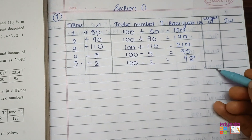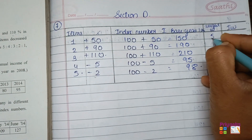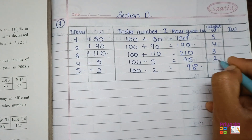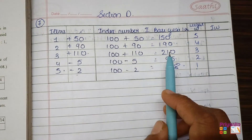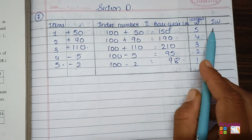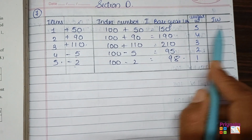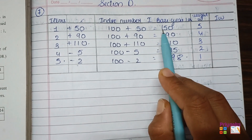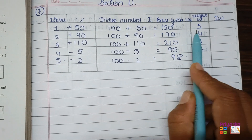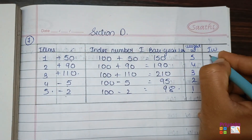For the weights, as given in the question, the ratio is 5:4:3:2:1. Now the table is ready with the I column and the weight column. Here we find out IW by multiplying: 150 multiplied by 5 gives 750.